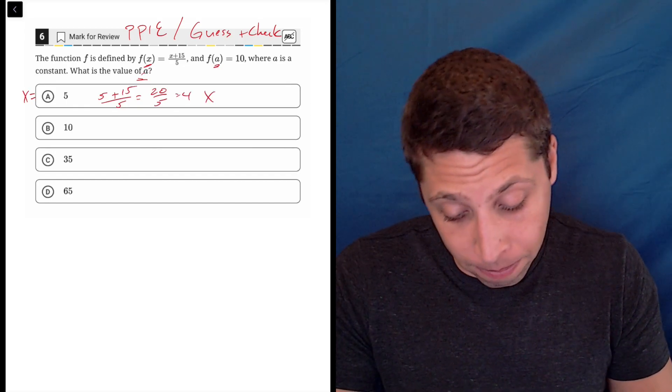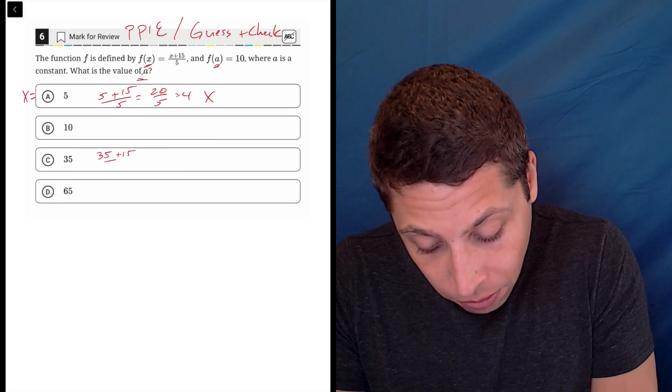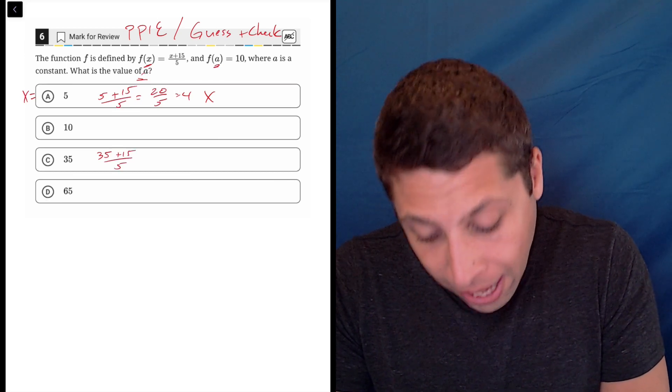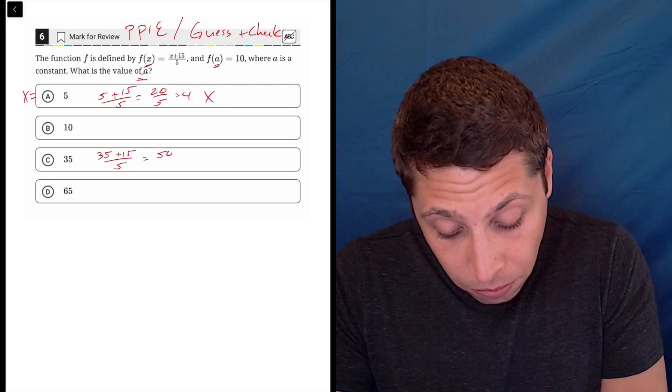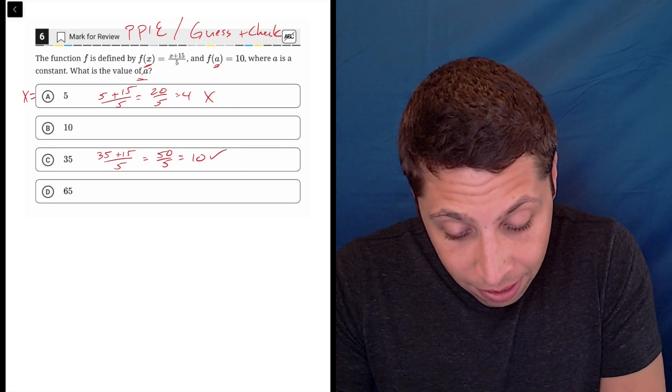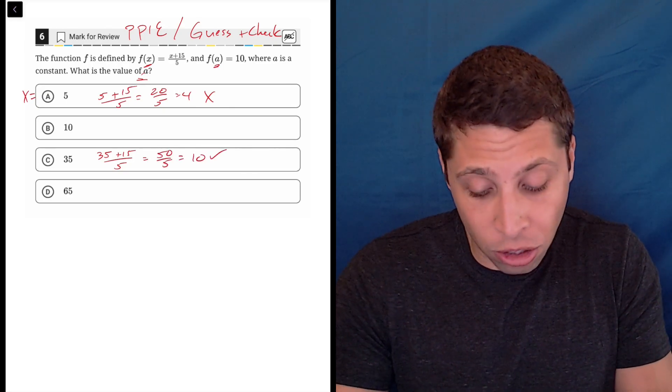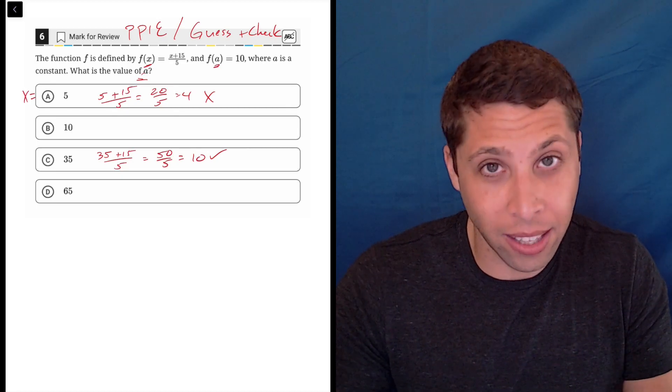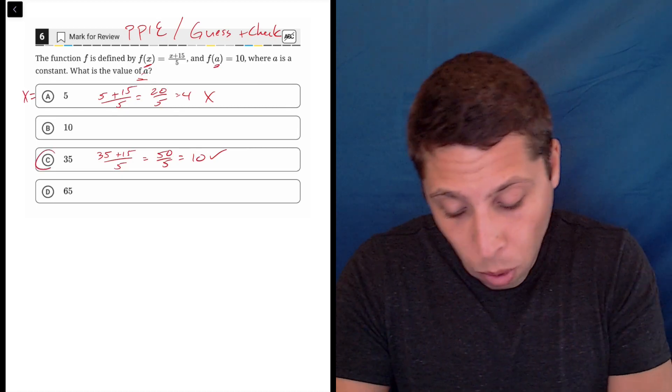So I might jump ahead to 35. 35 plus 15 over 5, that's 50 over 5, which is 10. There's nothing else to go on. We don't need to check the other choices because there's just this one point, so C is the answer.